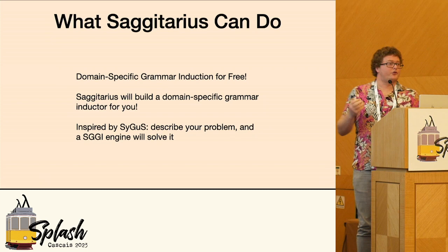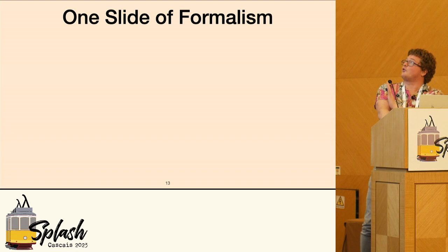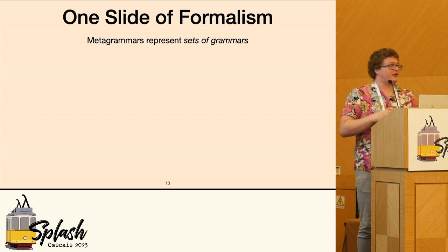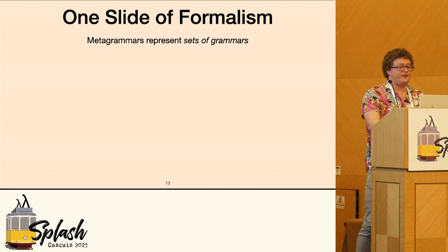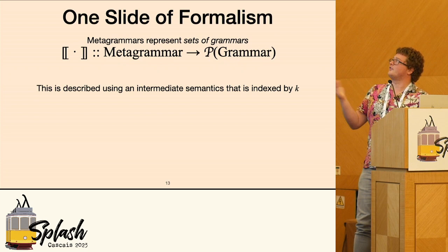But before we describe the CSV metagrammer, I'm going to give a quick slide of formalism, because I want to describe what metagrammers are. I would say that they are sets of grammars, because I'm trying to define a search space — the set of possible valid grammars. So we have a denotational semantics which turns metagrammers into sets of grammars.